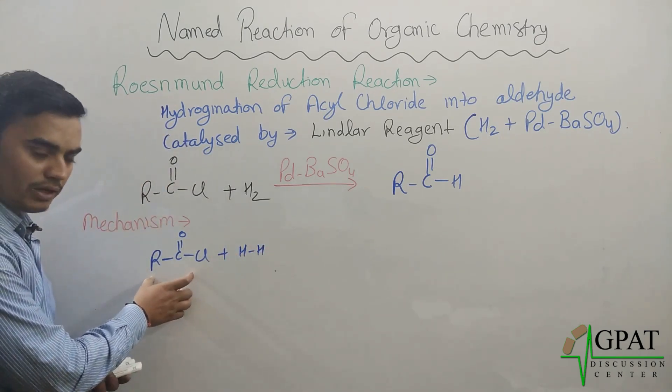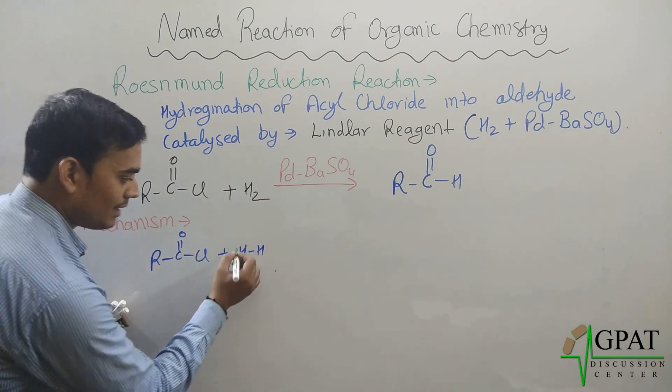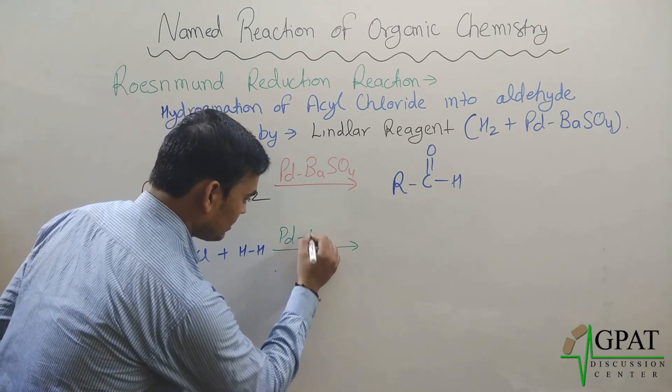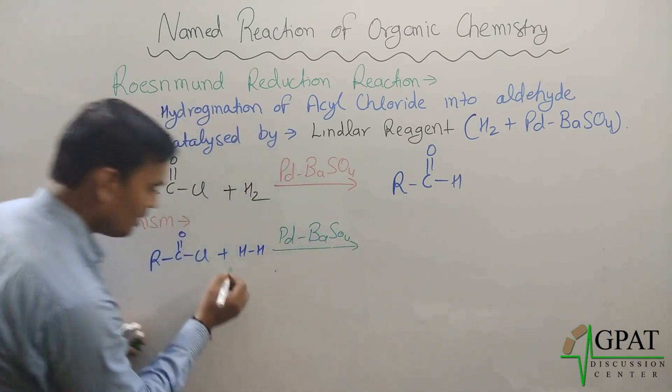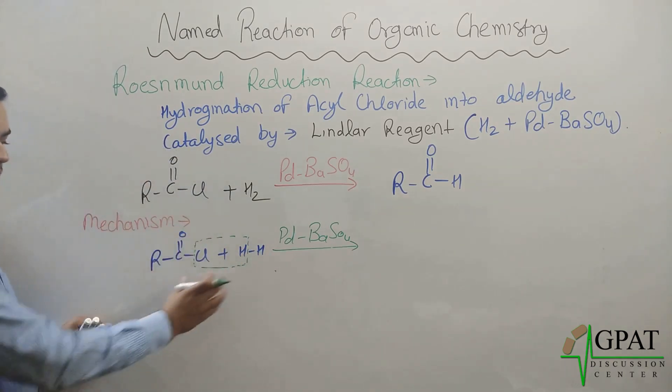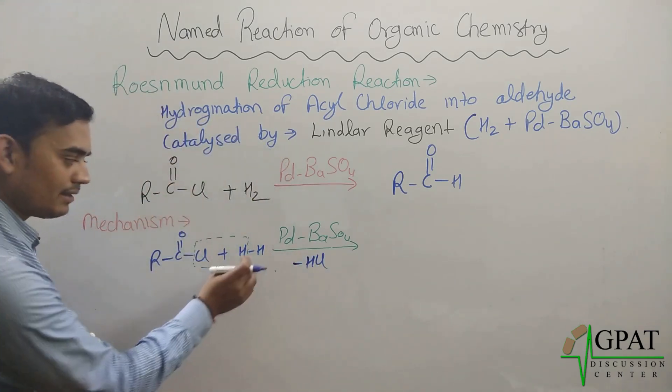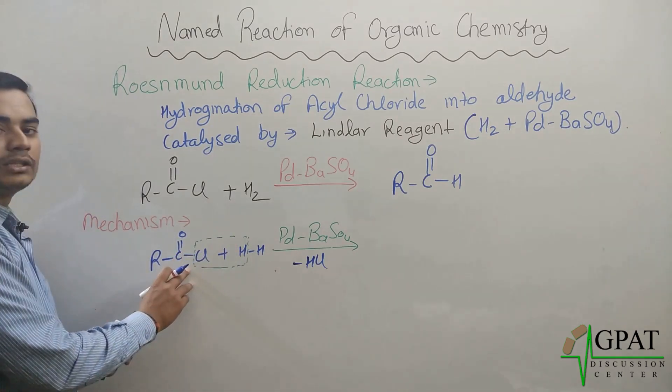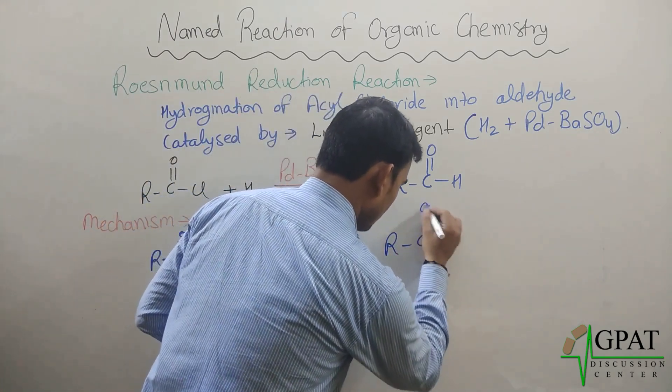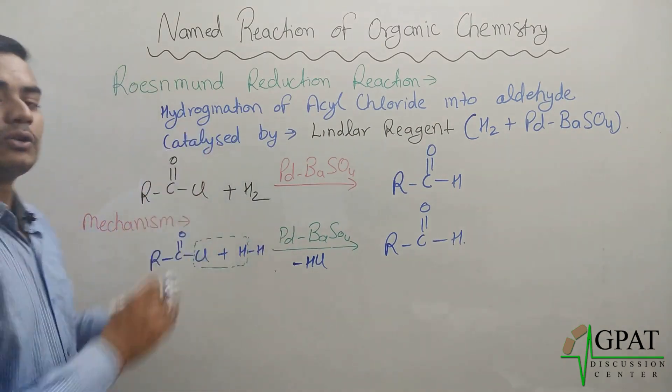What is the mechanism? Suppose this is your acyl chloride and this is your H2, hydrogen gas. When this hydrogen gas is passed over Lindlar reagent, one hydrogen comes out in the form of HCl, and another hydrogen gets added on this carbon to form aldehyde. This is the mechanism behind Rosenmund reduction reaction.